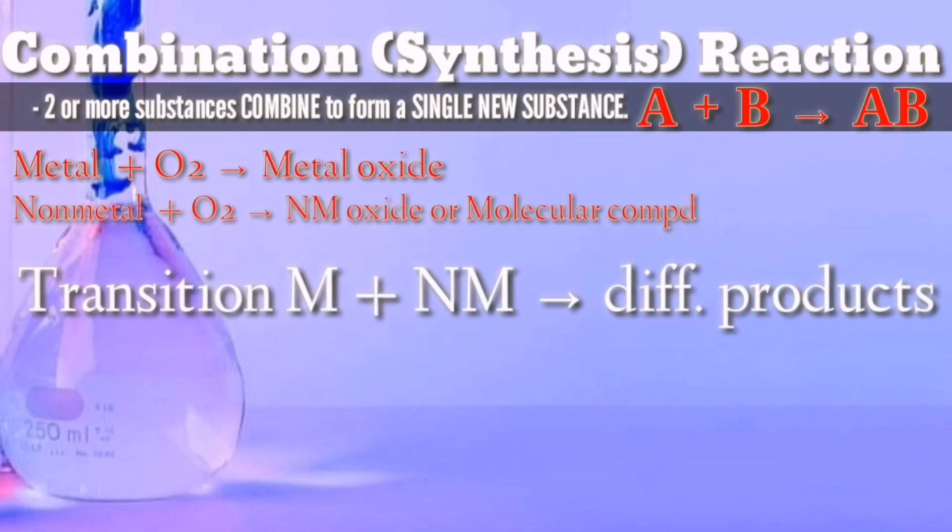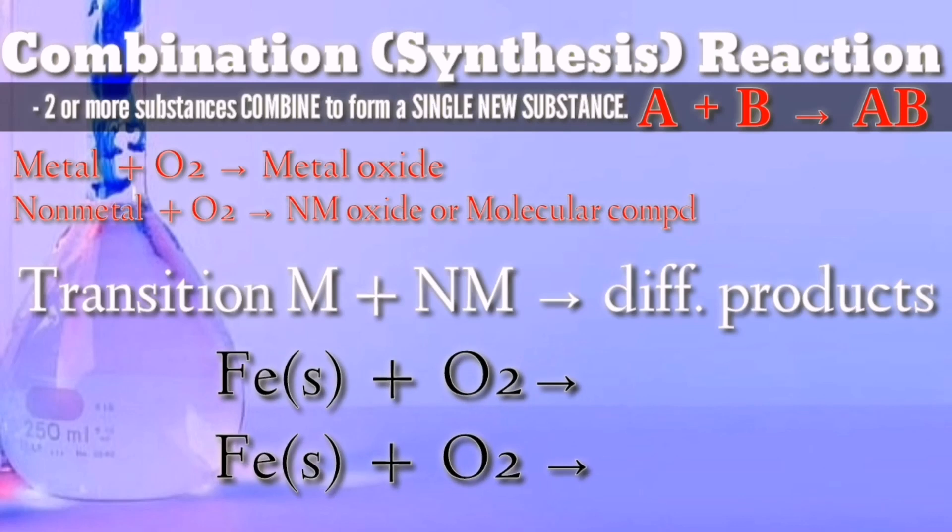Transition metals are capable of adopting multiple positive charges within their ionic compounds. Therefore, most transition metals are capable of forming different products in a combination reaction. Iron reacts with oxygen to form both iron-2-oxide and iron-3-oxide. For iron-2 combined with oxygen, it will form ferrous oxide. And for iron-3 plus oxygen, the product will be formed as ferric oxide.